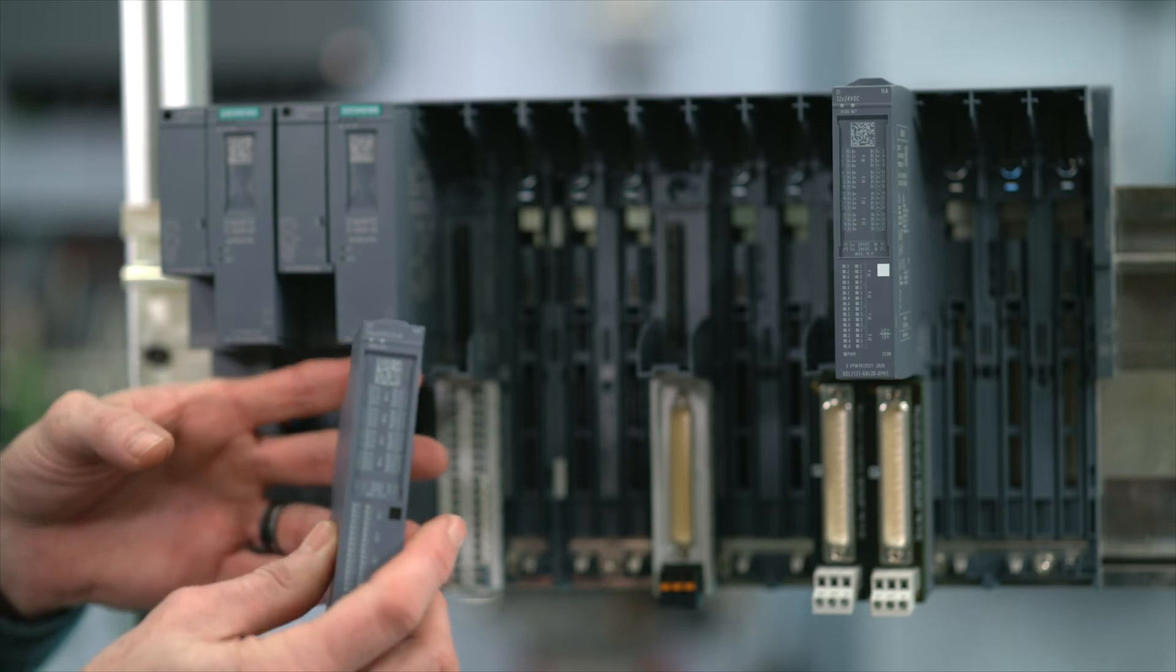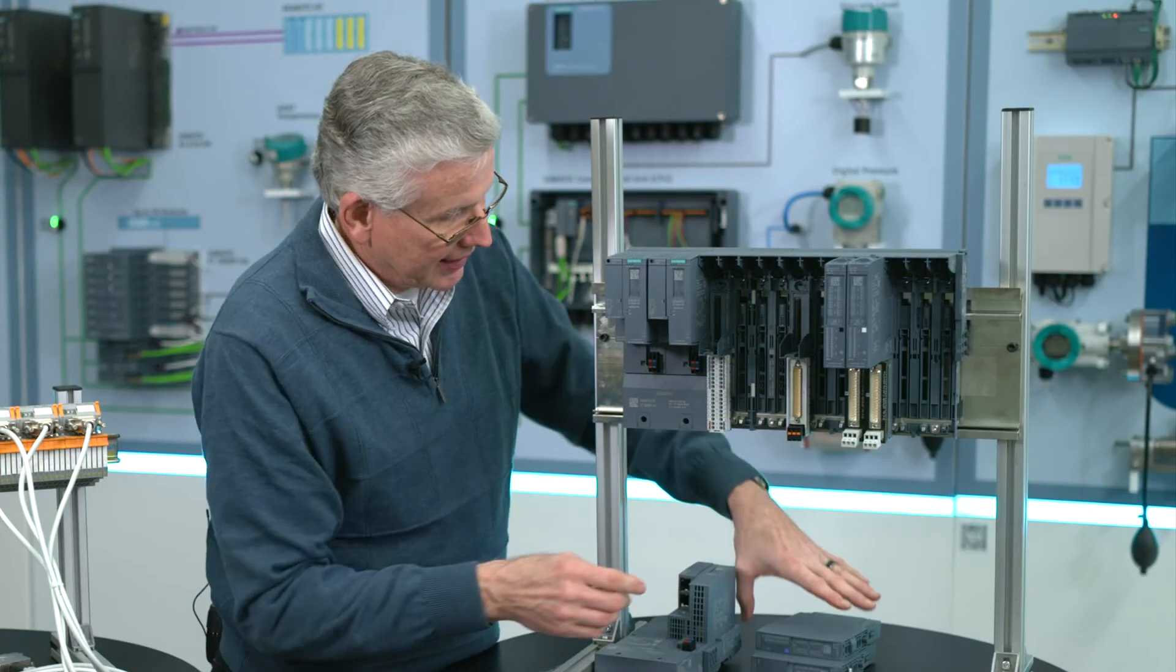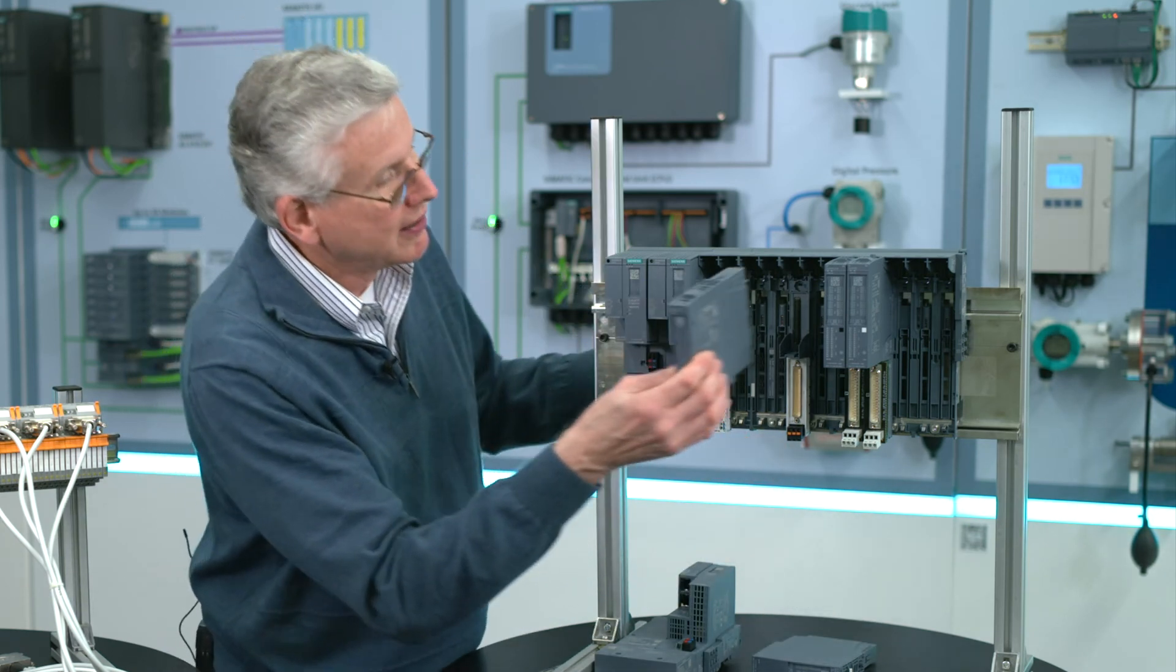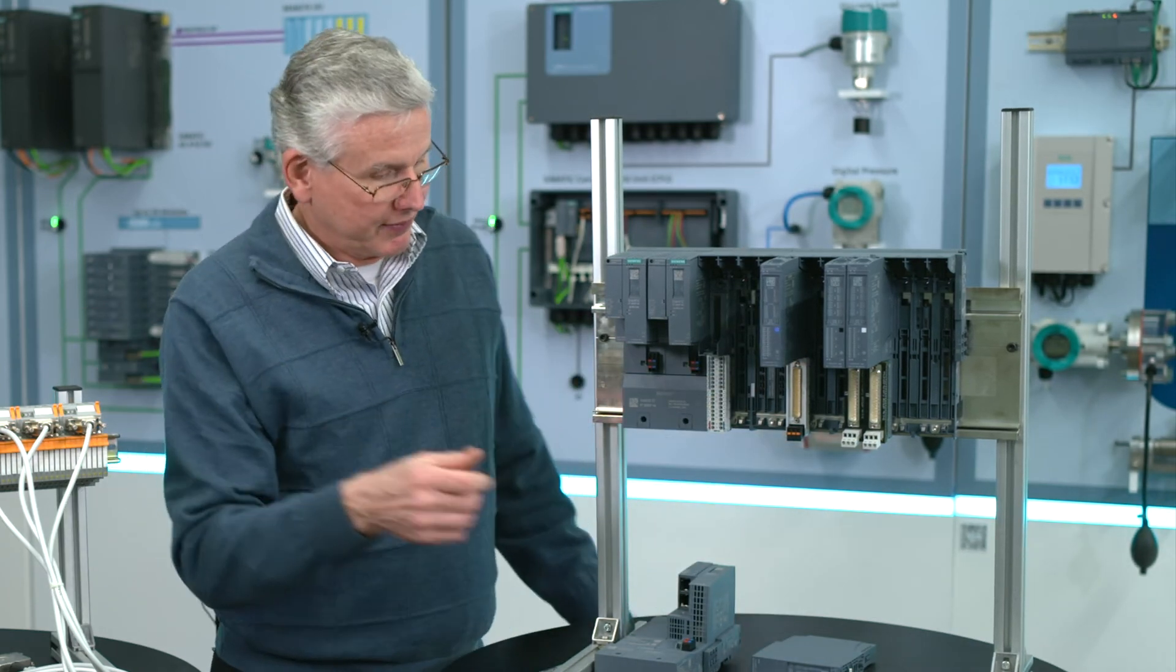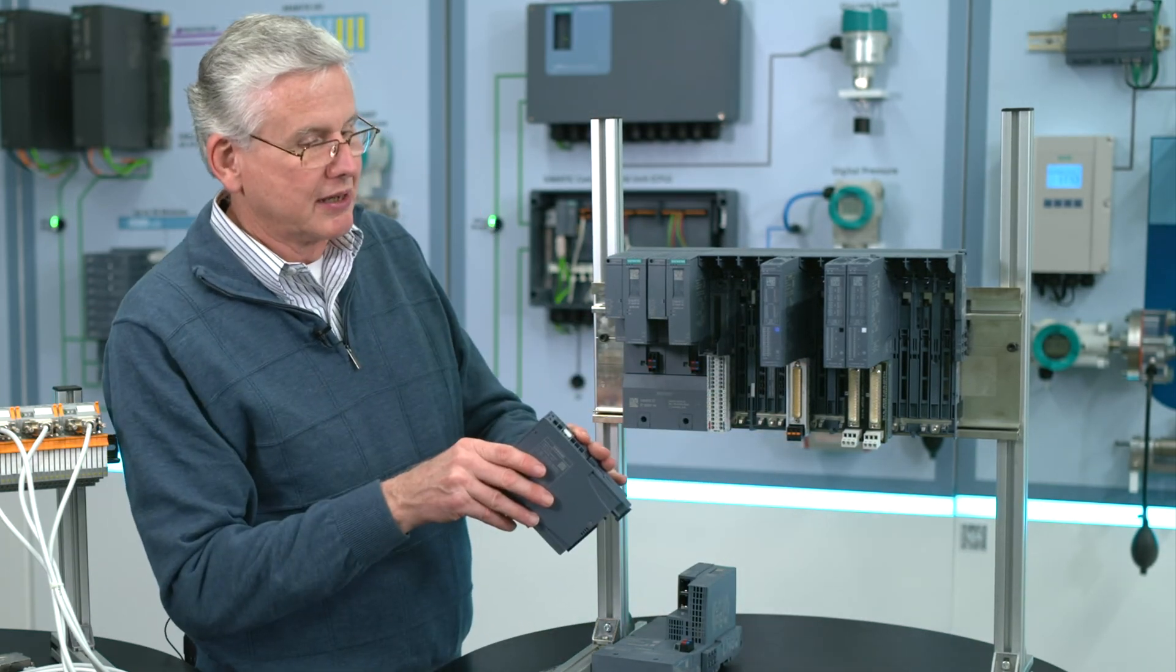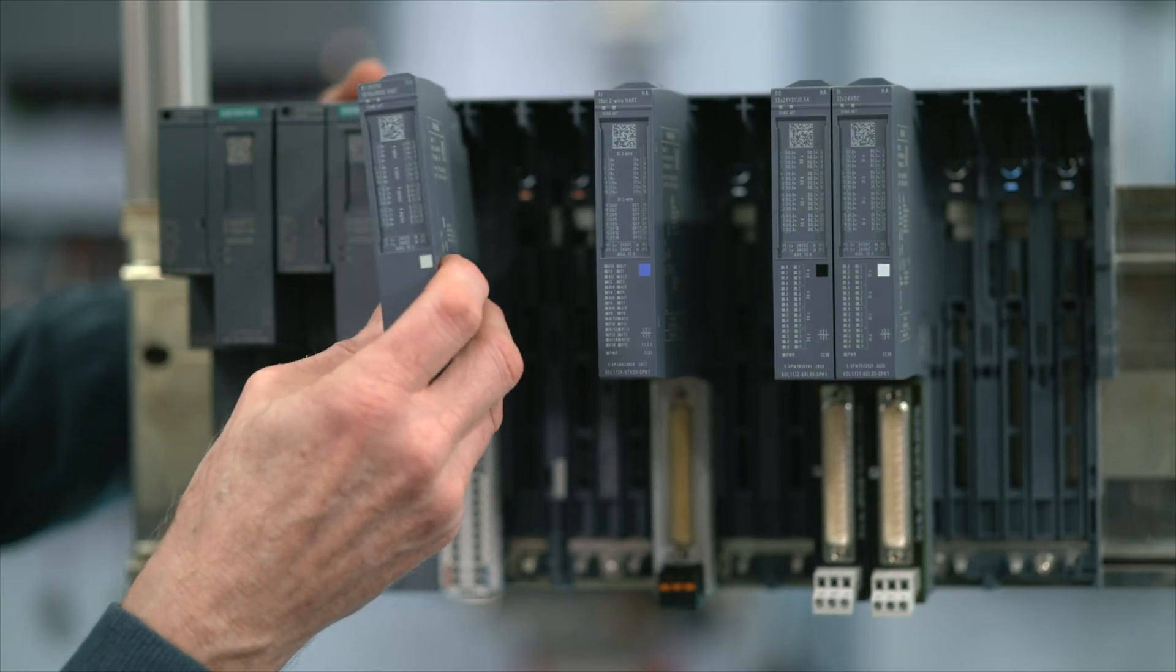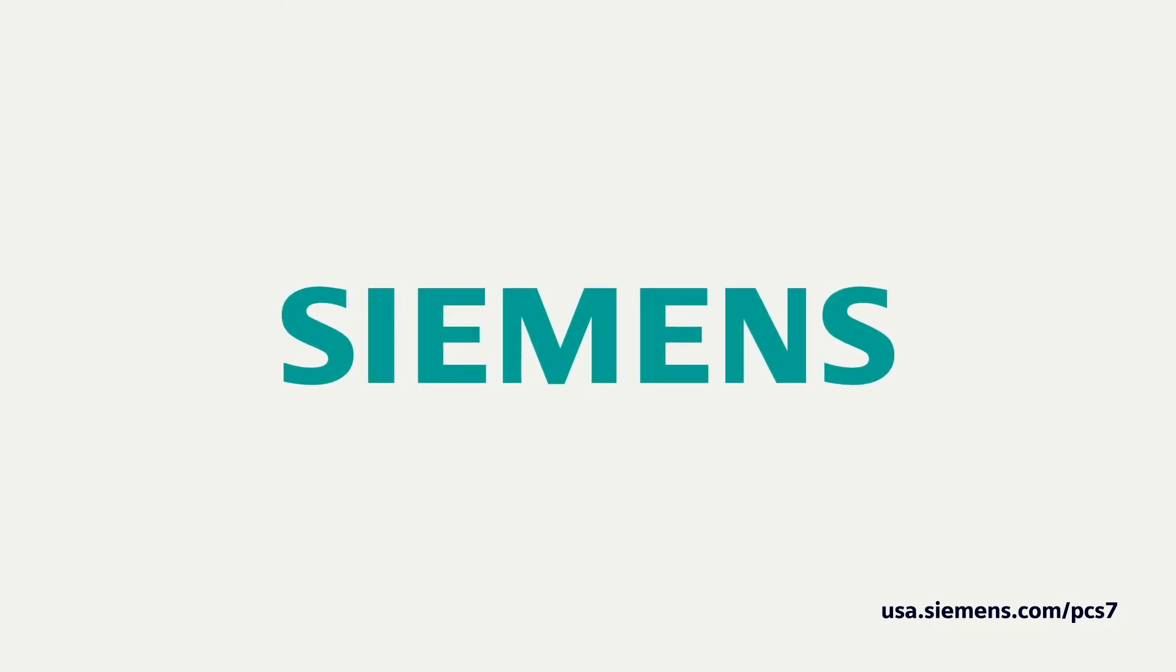I can take my 32 channel DO module, plug that in, I'm done. And then I can take an analog input card, and we could use that going to my D-sub, and the other module that I had here was an analog in, discrete in, discrete out, and we just plug that in.